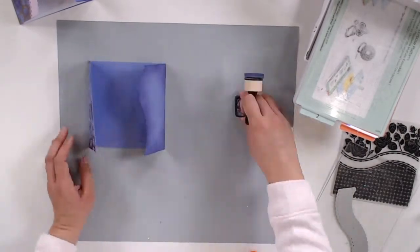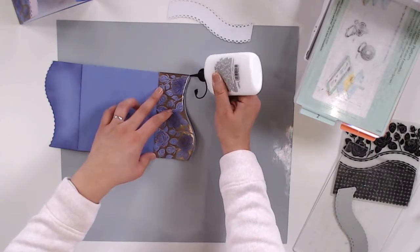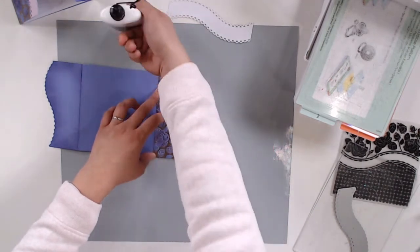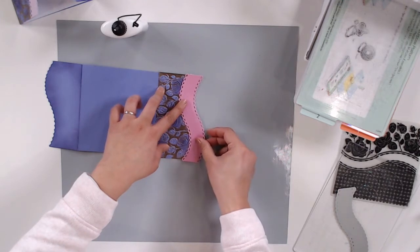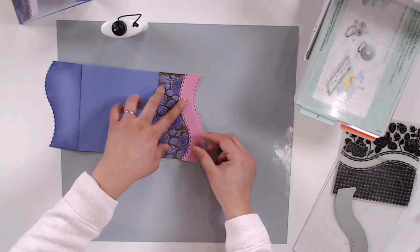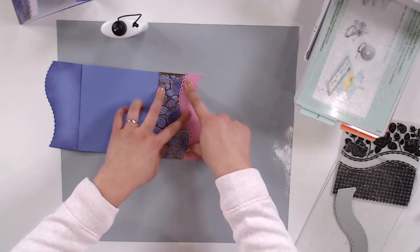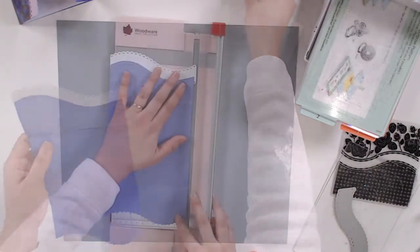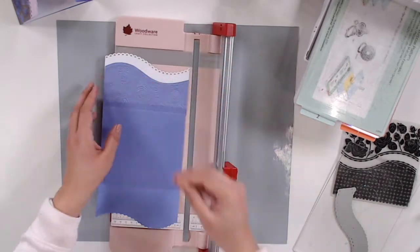Now I'm going to glue down the banner die cut using some liquid adhesive. Using liquid adhesive gives me a little bit of wiggle room because it doesn't dry instantly, and I want to make sure that the banner is in the right place because I do want my sentiment to eventually peek through my card. The liquid adhesive glue gives me a little bit more time to wiggle that banner around in case it's not in the right spot.